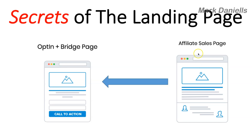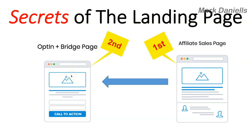The way you actually do that is very simple. I go backwards — I go from the sales page. This will apply for anything you are selling, including your own product. The idea is to take a look at the sales page. Do not build your opt-in page or bridge page until you look at the sales page and take the information from it.